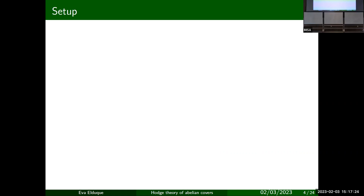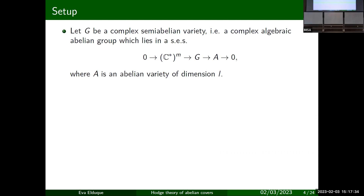So, Alexander modules. For me, G is going to be a complex semi-abelian variety. These have already appeared in this conference — it's a complex algebraic abelian group which lies in a short exact sequence between a torus and an abelian variety. So it can be either of these or something in the middle. I'll let the dimension of the torus be one parameter and the dimension of the abelian variety be another.